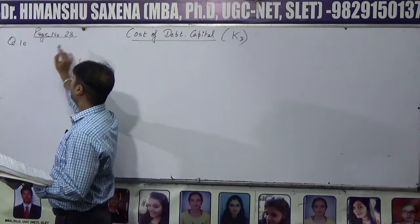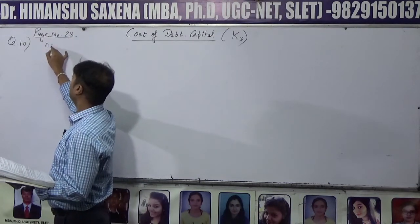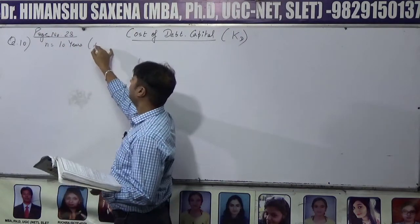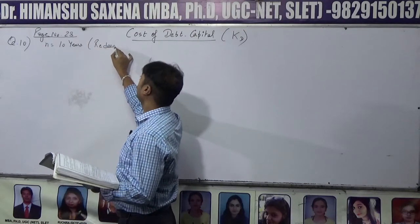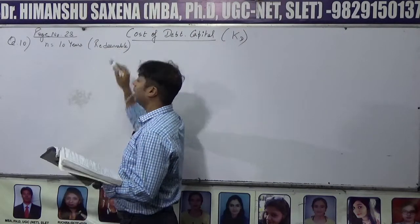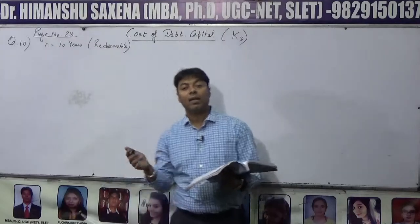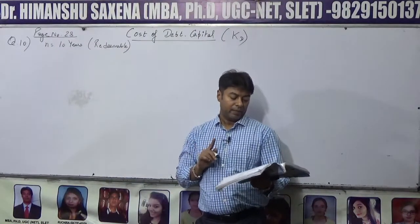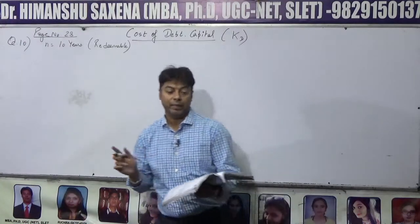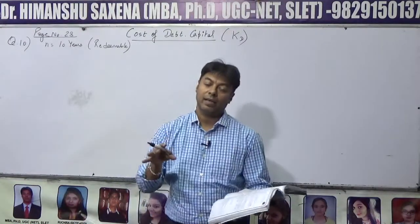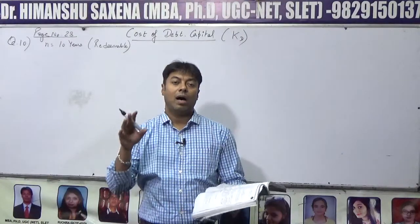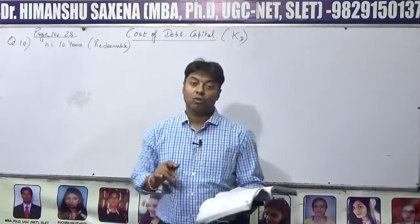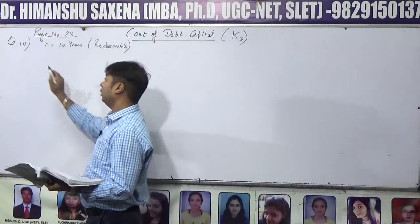इस question में number of years = 10 years दिये हुए हैं, तो debentures का nature redeemable है और redeemable वाला formula लगाएंगे। इसमें लिखा है: debentures are to be redeemed after 10 years at 5% premium. जब आप इनको 10 साल के बाद repay करेंगे तो 5% premium देंगे।